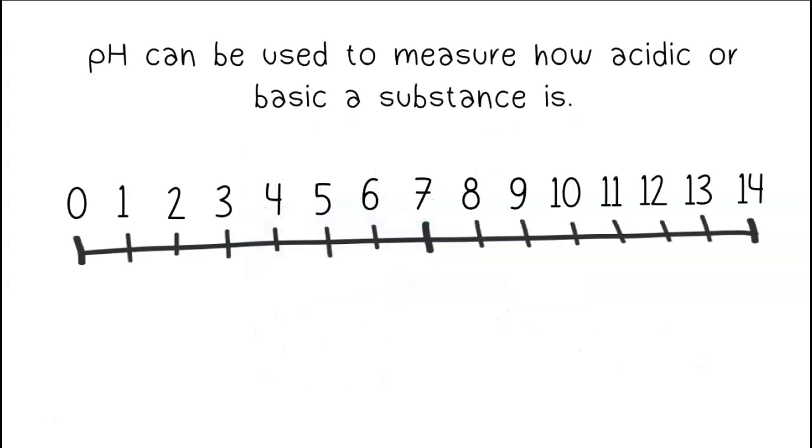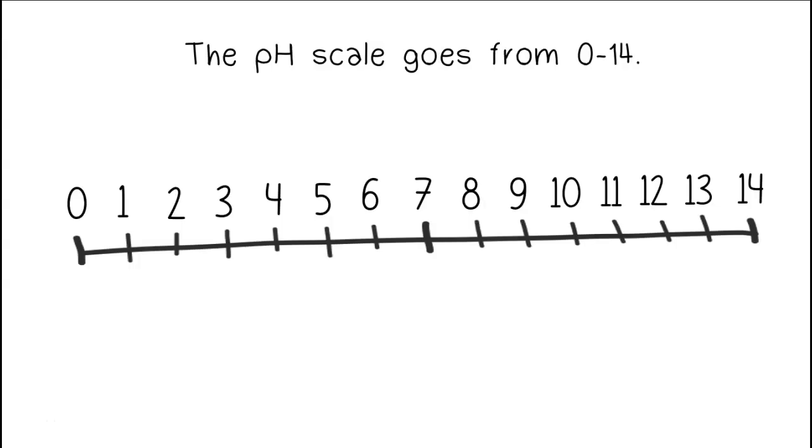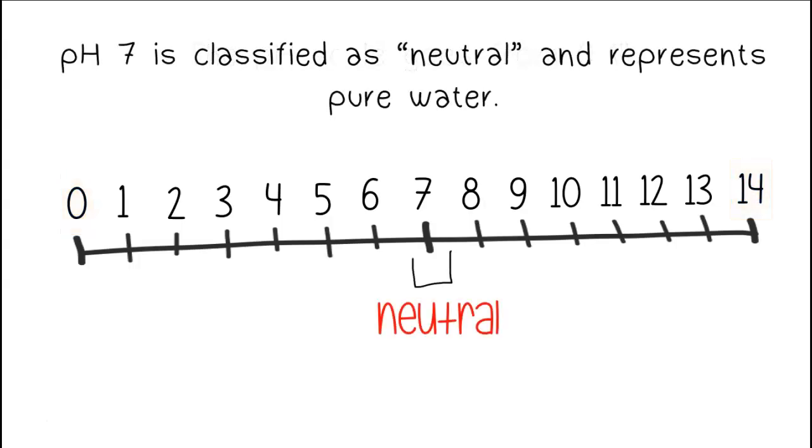pH can be used to measure how acidic or basic a substance is. The pH scale goes from 0 to 14. pH 7 is classified as neutral and represents pure water.